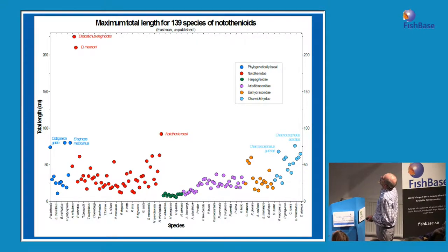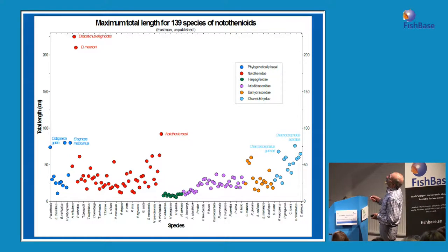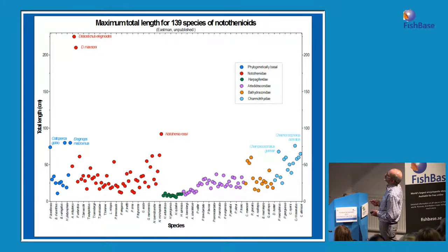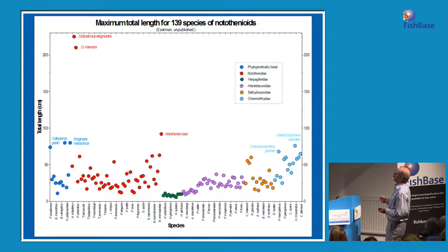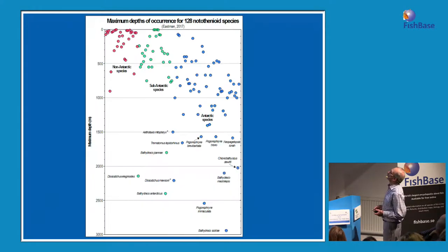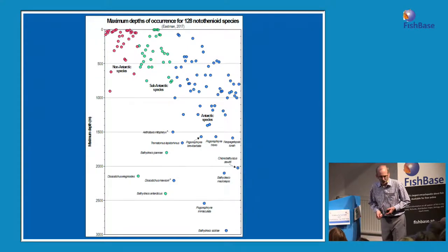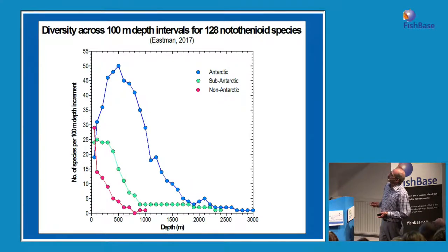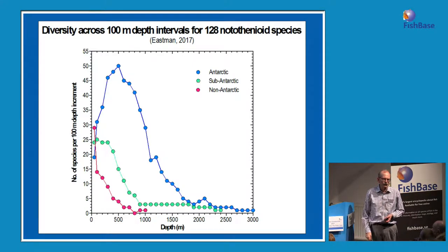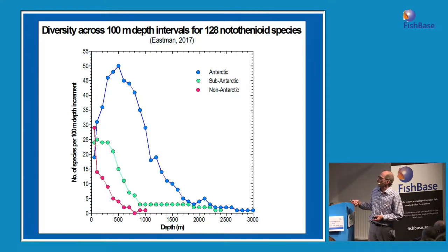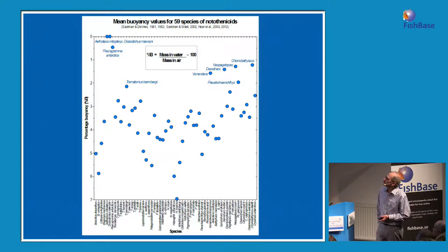This gives you one idea of the axes of diversification: size ranges from the toothfish at 2 meters to intertidal forms at 7 centimeters. Depth of occurrence ranges from very shallow waters to nearly 3,000 meters — 2,941 to be exact. Most species in the Antarctic are found between 7 and 900 meters. The shelves are deepened by isostatic depression — the ice sheet weighs down the continental shelf, so while most continental shelves are at 120 meters, in the sub-Antarctic it's about 300 meters, and in the Antarctic it's 500 to 700 meters, and the fish live accordingly deeper.